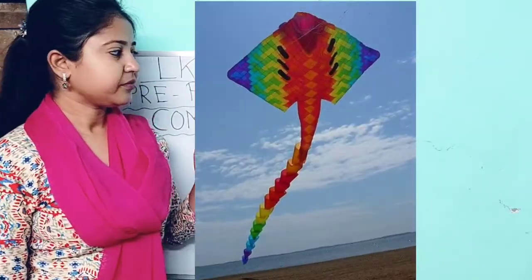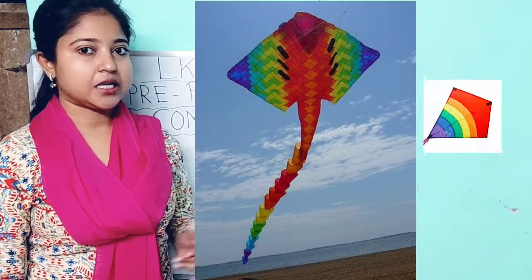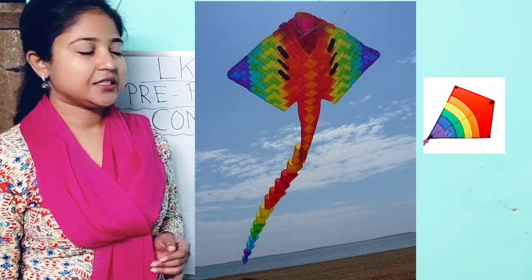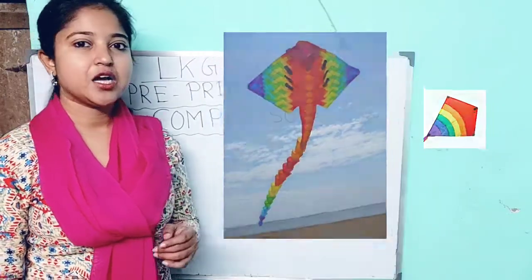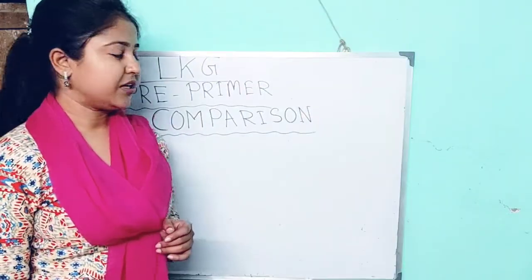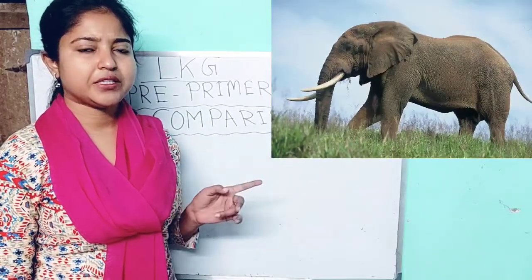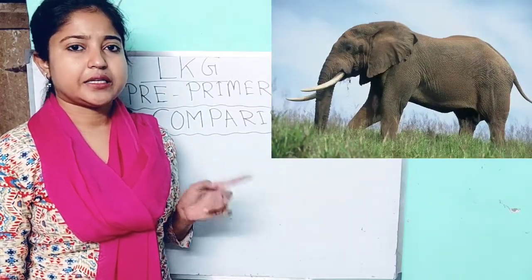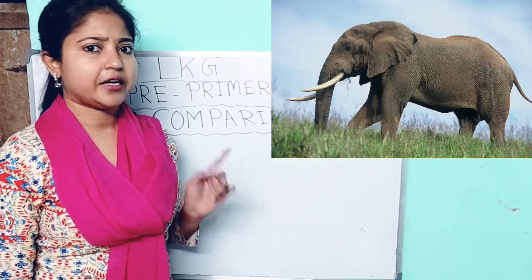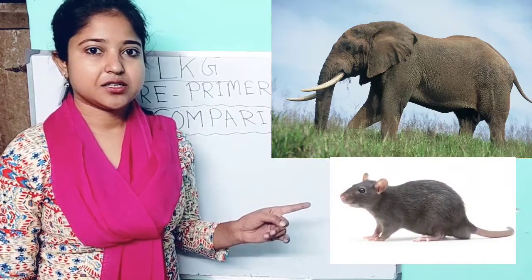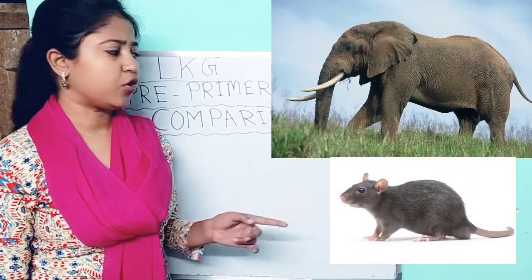Let's see a few other pictures. This is a big kite and that is a small kite. Let's see another one — this is a very big animal. Which animal is it? It's an elephant — it is very big. And that's a rat, which is very small.